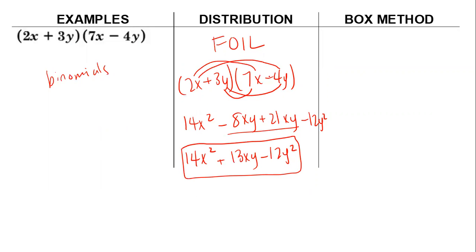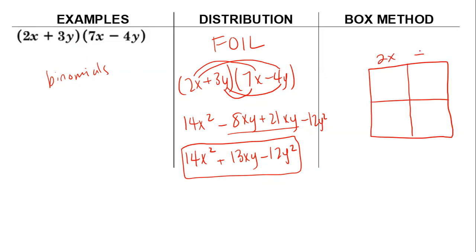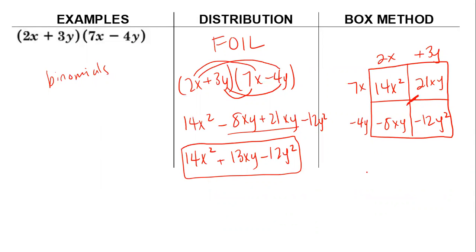Just because there are multiple variables doesn't mean the process changes — you just end up with more variables in your polynomial. You could still do this with the box method. Since they're binomials, you have a 2 by 2 box with 2x and 3y on one side, 7x and negative 4y on the other. 7x times 2x is 14x squared, 7x times 3y is 21xy, negative 4y times 2x is negative 8xy, negative 4y times 3y is negative 12y squared. Combine like terms and you get 14x squared plus 13xy minus 12y squared.